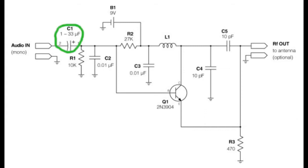The audio signal comes in at the left side. The 1 to 33 microfarads cap C1 gets rid of any DC in the signal. The resistor R1 after the capacitor C1 removes any charge that has built up in the capacitor C1.